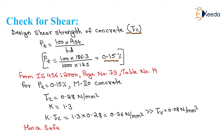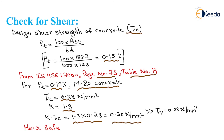For P_T equals 0.15 percent and M20 grade concrete, from IS code 456 page number 73, table number 19, we get tau_c equals 0.28 N per mm square. K into tau_c equals 1.3 into 0.28 equals 0.36 N per mm square, which is greater than tau_v. Hence safe.